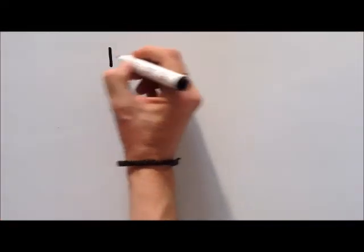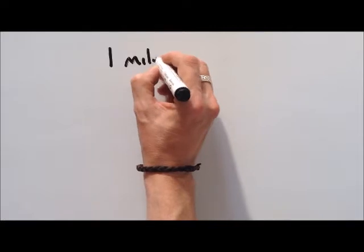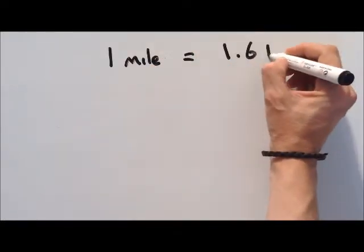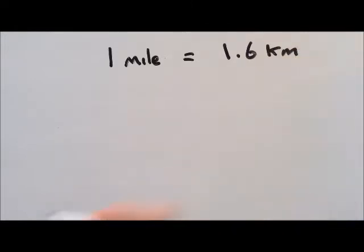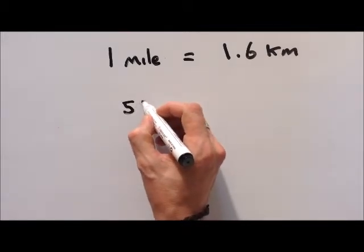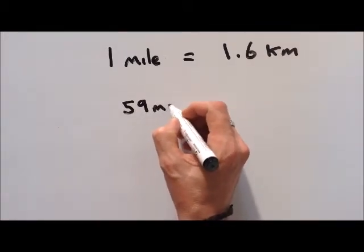This other way is knowing that 1 mile is equal to 1.6 kilometers. So let's say we're given some miles. So we're given 59 miles.